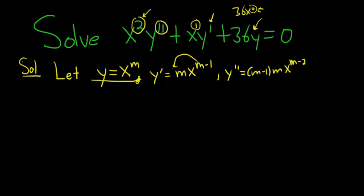So you call this y, take the derivative and use the power rule, then plug everything into your differential equation. So we have x squared, and then y double prime is m minus 1 times m, x to the m minus 2.